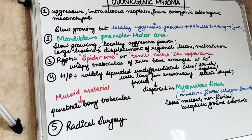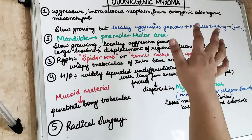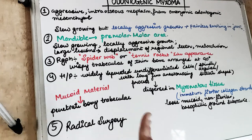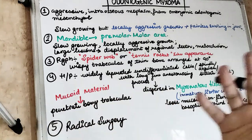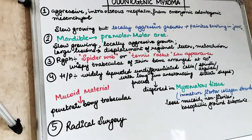This lesion occurs mostly in the mandibular premolar and molar region. Initially it is slow growing, but sometimes the lesion assumes a huge size, and then it can cause displacement of the regional teeth, malocclusion, or even facial deformity.